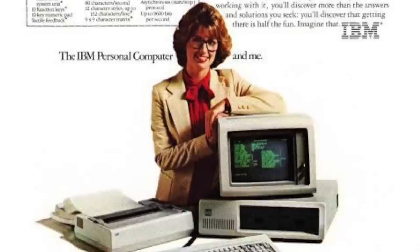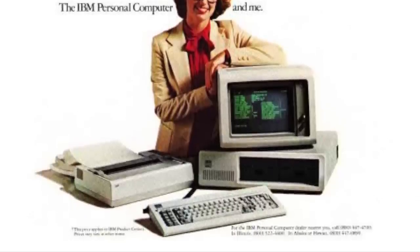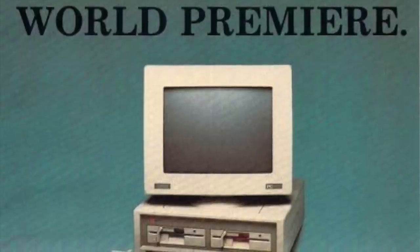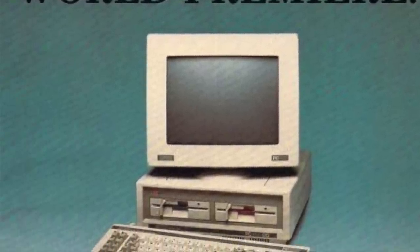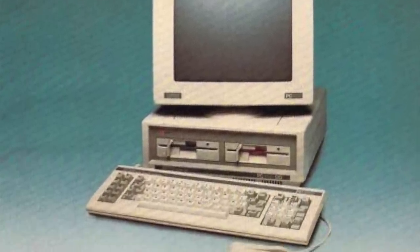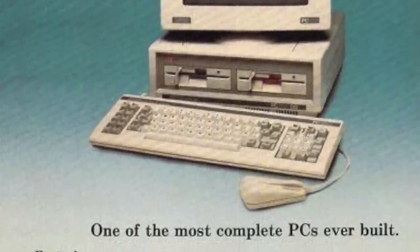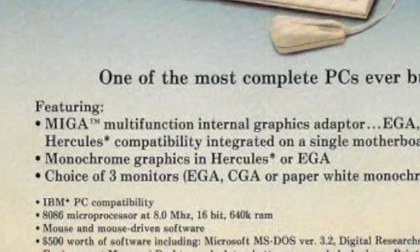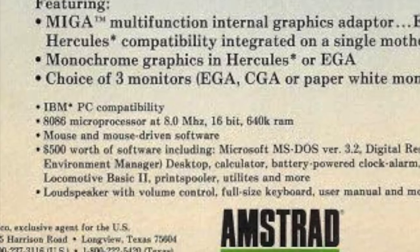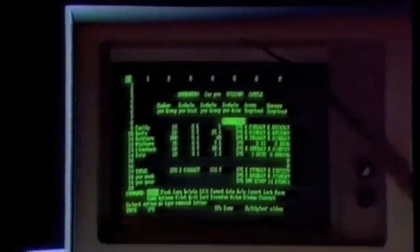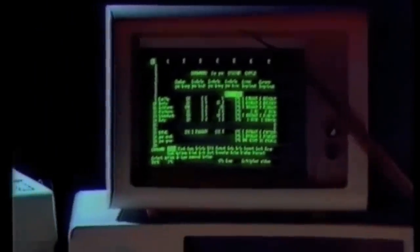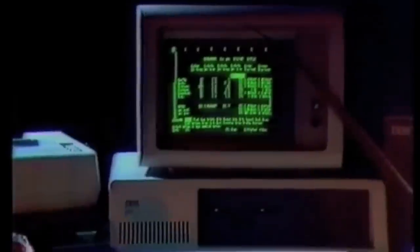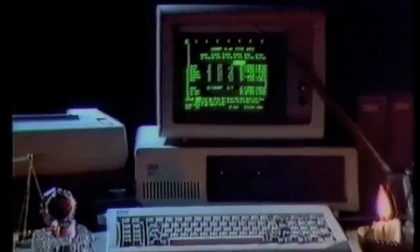Whether it was the right choice or whether it could have been pushed a little further is something we'll never know. But what we do know is that later PC clones, such as the Amstrad PC-1512, shipped with the 8086 instead of the 8088 and performed favourably over the IBM equivalents. All the choices had been made, and by the autumn of 1981, the first PC arrived — the 5150.